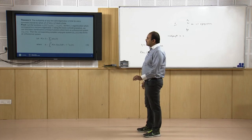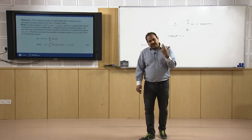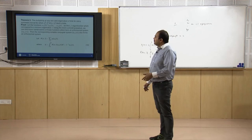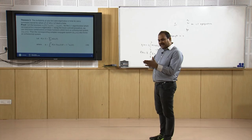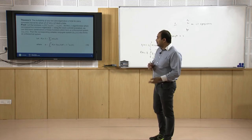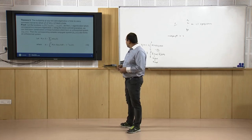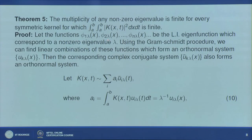Theorem 5 states: for a non-zero eigenvalue of every symmetric L² kernel (for which ∫∫|k|² dx dt is finite), the multiplicity must be finite — corresponding to one eigenvalue we cannot have infinitely many linearly independent eigenfunctions.